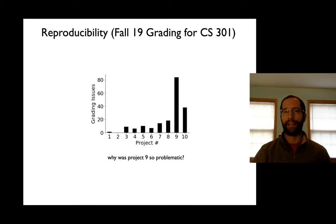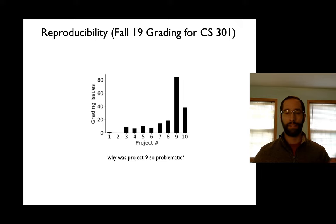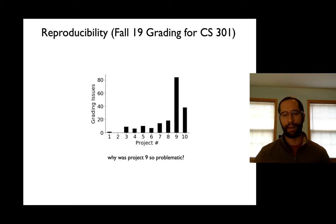Let's look back at the last course, CS 301 or 220. In that one, people would submit projects, and at the end of the semester I had a form that people could fill out if they thought there were issues with one of their projects. This shows how many issues people had across each project, and project nine was by far the most problematic. Maybe some of you had issues with that — think back, what was tricky about that one?